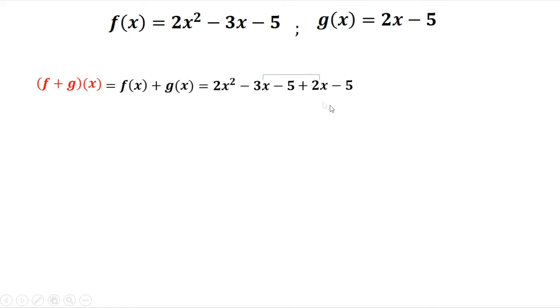So negative 3x plus 2x, and negative 5 and negative 5. This gives 2x squared, negative x, and negative 10. So this is the answer.